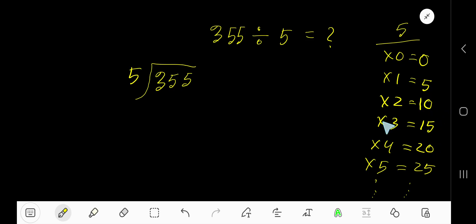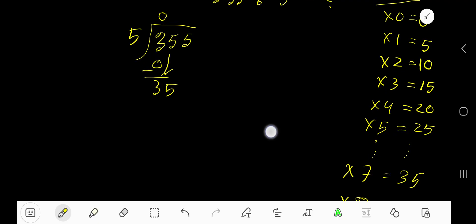15 plus 5 equals 20, and so on. Now, 5 goes into 3 how many times? 0 times, because 3 is less than 5. So 0 times 5 is 0. Subtract, then bring down this 5. Now we have 35. 5 goes into 35 how many times?